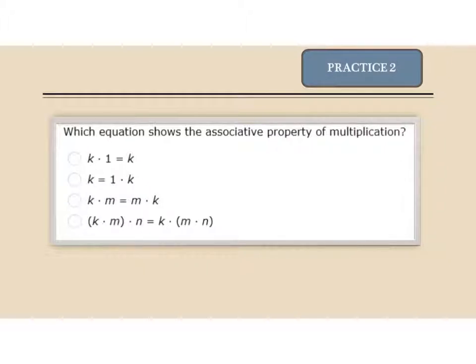Practice problem 2 asks which equation shows the associative property. Associative, you're going to see parentheses on both sides of the equal sign because it's a series. This one has parentheses on both sides of the equal sign and the letters K, M and N are on both sides.